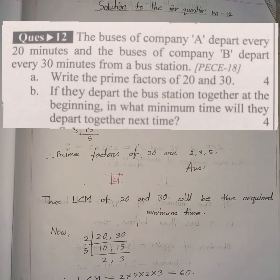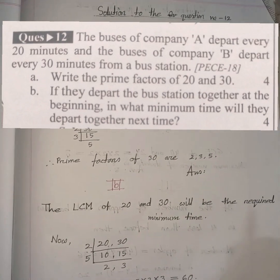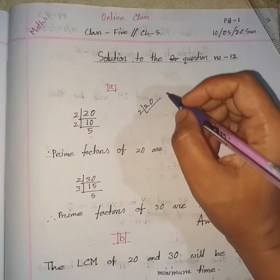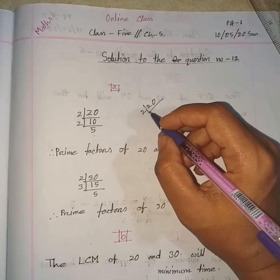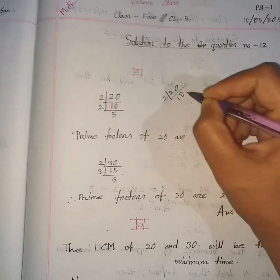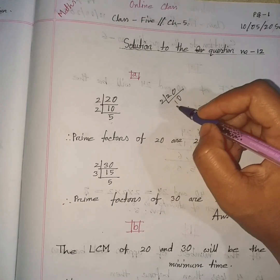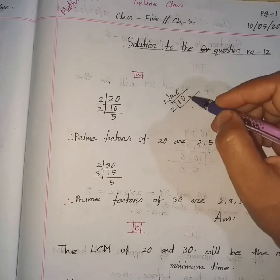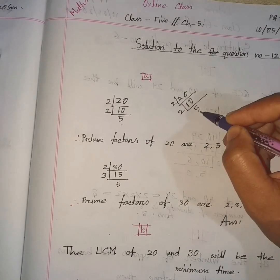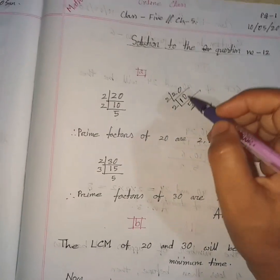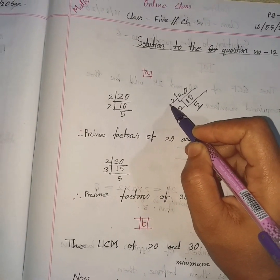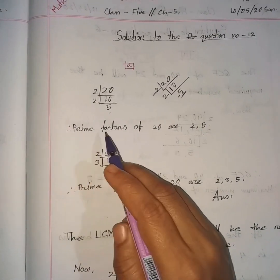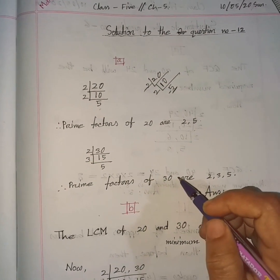Now to solve A, we have to find the prime factors of 20 and 30. First, as 20 is an even number, we divide it by 2. Dividing 20 by 2, we get 10. Again, it is an even number, so dividing 10 by 2, we get 5. And 5 is a prime number. So we get 2 prime factors of 20: 2 and 5. Therefore, prime factors of 20 are 2 and 5.